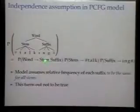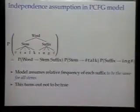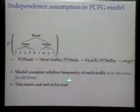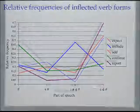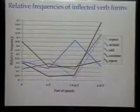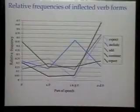I think at least one problem here is that this is such a simple model, we should be able to find out what's wrong. One problem is that the PCFG model is making an independence assumption — it's assuming that the probability of a suffix is independent of the stem. In other words, it assumes the relative frequency of each suffix is the same for all stems. If we take a few verbs and plot the suffix versus relative frequency, we can see it varies quite wildly, and these differences are all highly significant for high-frequency verbs. So the PCFG independence assumption is nowhere close to being true.